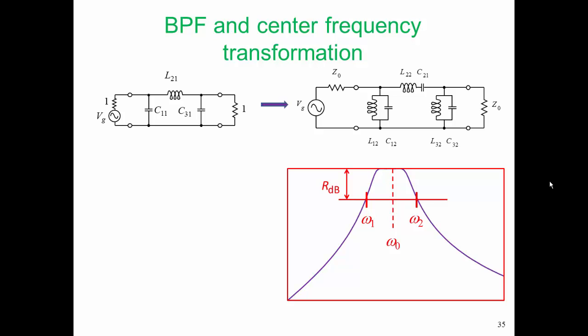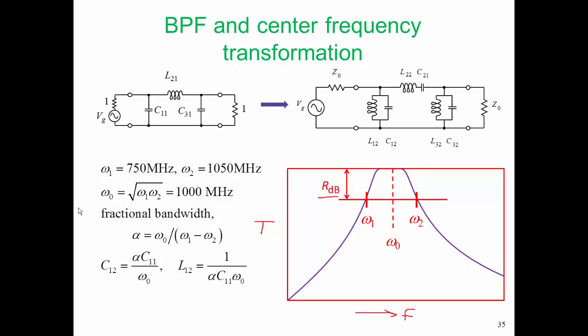Here is the transformation from our lumped element low-pass prototype filter to our lumped element bandpass filter. We have frequency along the bottom, transmission response on the vertical axis, with corner frequencies defined by omega-1 and omega-2. These corner frequencies will not be down 3 dB but down by the ripple level, and our center frequency is omega-0. So here is the formula that does that translation. Our filter has a center frequency of 1,000 megahertz with a 10 percent bandwidth, giving us alpha of 10. So we calculate C12 and L12 using that formula, giving us a bandpass filter which has the response we want.